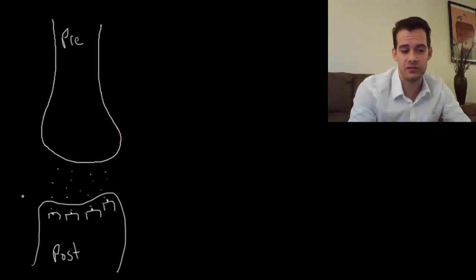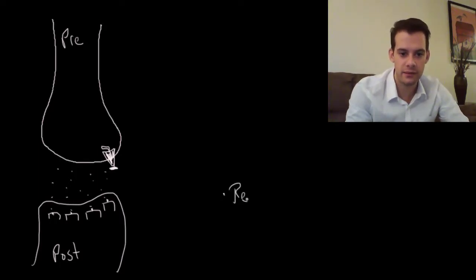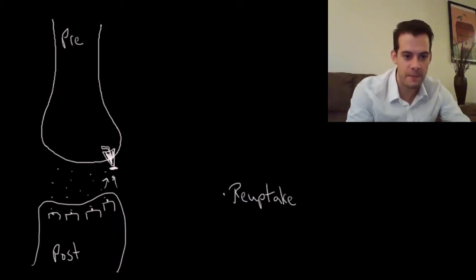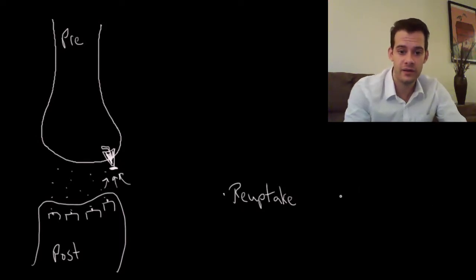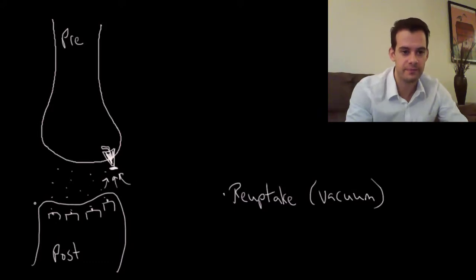There's three things that happen to maintain the synapse. The first thing that can happen is that the presynaptic neuron has channels on it, and what these channels essentially do is they suck up the neurotransmitter. This is called reuptake. These channels can draw the neurotransmitter back into the presynaptic neuron. When it's drawn back inside, it can be put back inside vesicles and reused. So this is the vacuum cleaner approach to clearing the synapse.